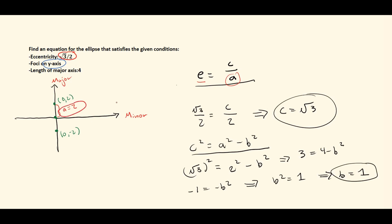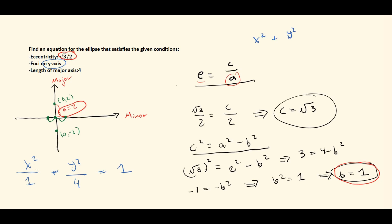To form our equation, we need a and b. The equation is x squared over something plus y squared over something equals one. Since the major axis is the y-axis, a squared goes below y: a is two, so a squared is four. The minor axis is the x-axis, and b equals one, so b squared is one. Our equation simplifies to x squared plus y squared over four equals one.